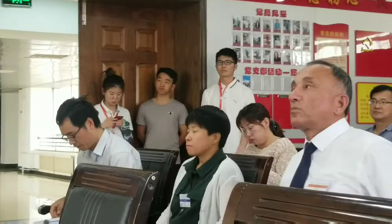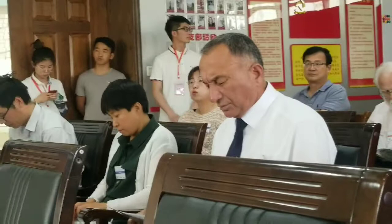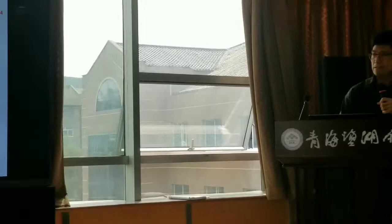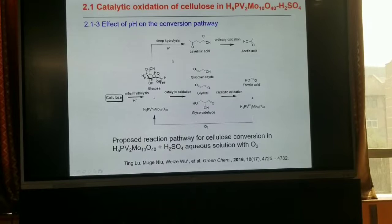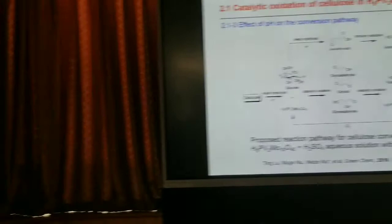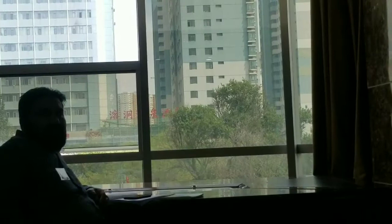The yield of formic acid from model compounds is much higher, more than 50%. For levulinic acid, there is a higher yield of acetic acid. We propose that cellulose is first hydrolyzed to glucose, then glucose is oxidized through intermediates to formic acid. Acetic acid is also produced because glucose dehydrates to levulinic acid, and the levulinic acid is oxidized to produce acetic acid and also formic acid.